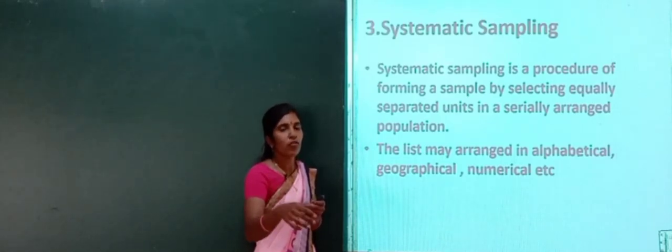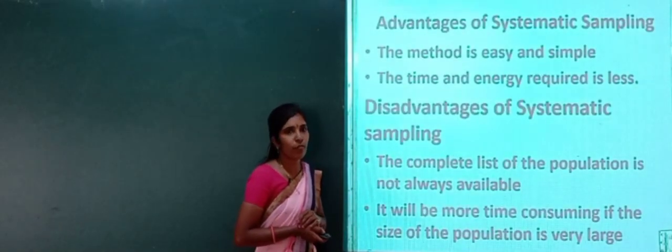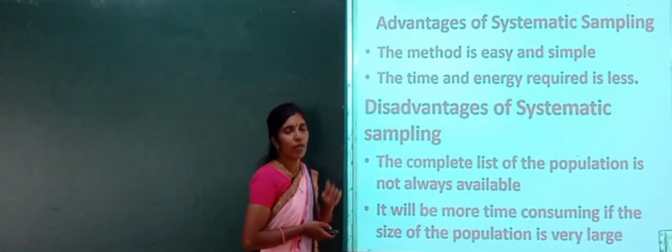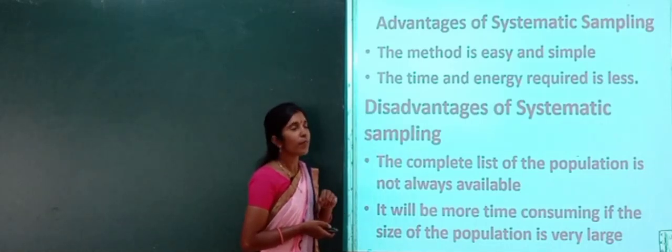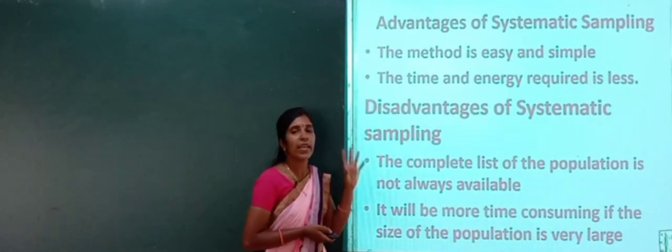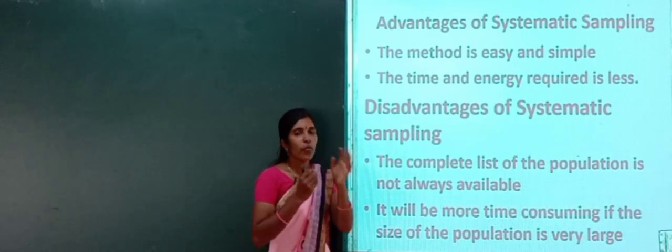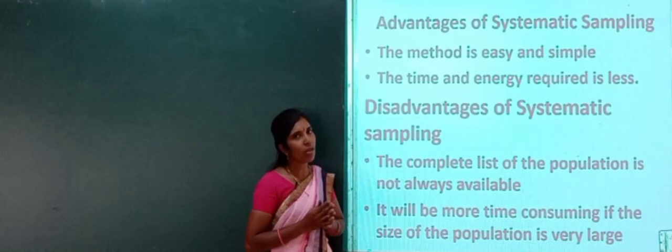The advantages of systematic sampling: first, this method is easy and simple compared to other methods. Second, the time and energy required is less, because we arrange data alphabetically or geographically and systematically select, which takes less time and energy.